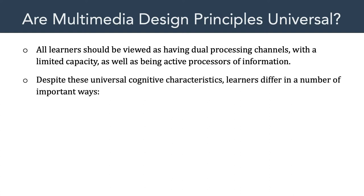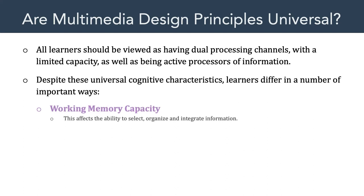However, despite those universal cognitive characteristics, learners differ in a number of important ways. How do they differ? Humans can differ in terms of their working memory capacity — some people have more working memory capacity than others.